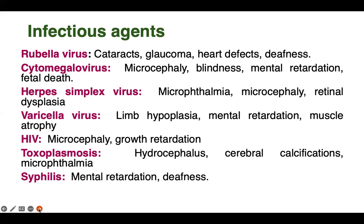If there is HIV infection, which is sexually transmitted, it causes microcephaly and growth retardation. Toxoplasmosis leads to hydrocephalus — that is, a large-sized brain or head — cerebral calcification with calcium deposits scattered in the brain, and microphthalmia, meaning small-sized eyeball. Syphilis leads to mental retardation and deafness. These are all the infectious agents that can give teratogenic effects to the baby.